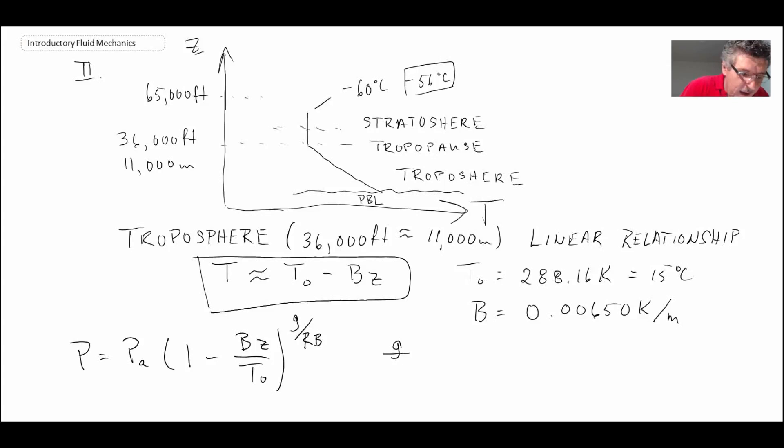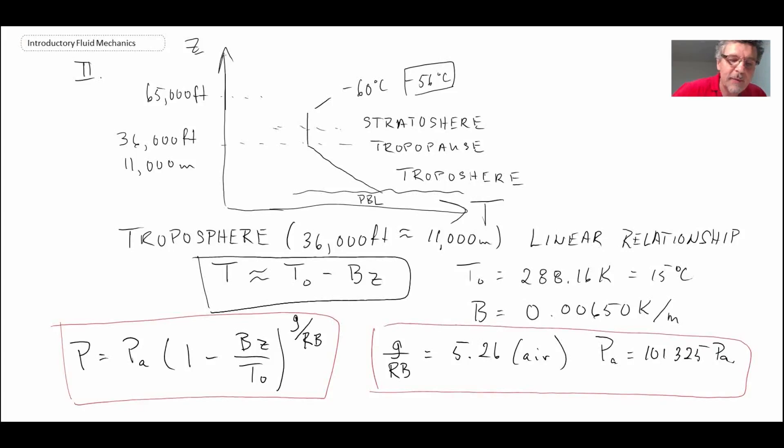For air, atmospheric air, G over RB, that ratio is 5.26, and P_A typically is 101,325 pascals. This would be the relationship that you would use for the pressure in the troposphere as you go up, and that would apply up to about 11,000 meters or 36,000 feet.